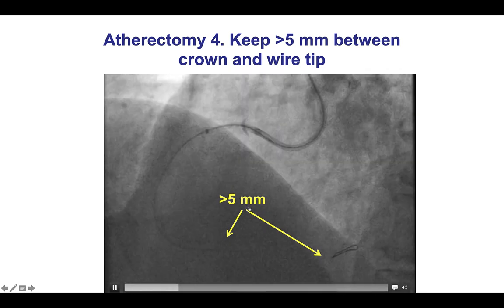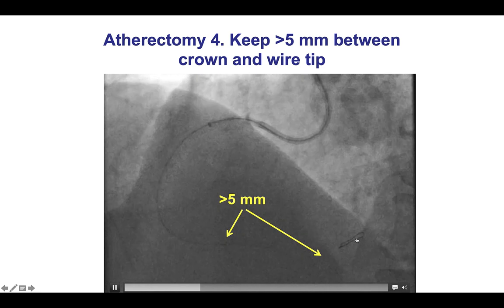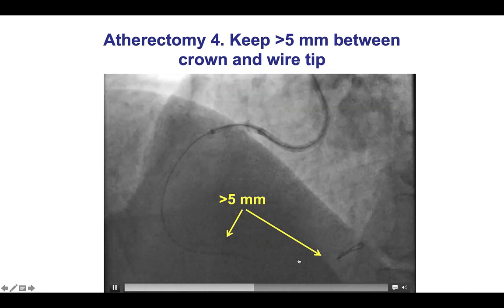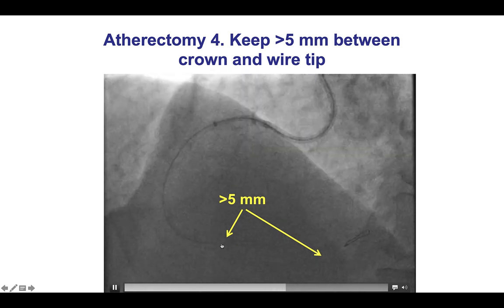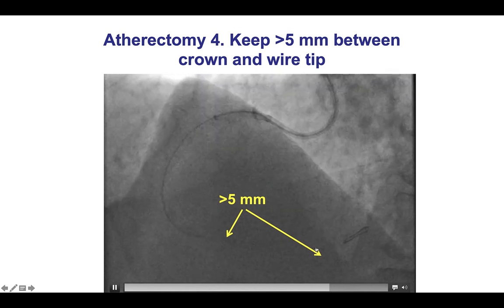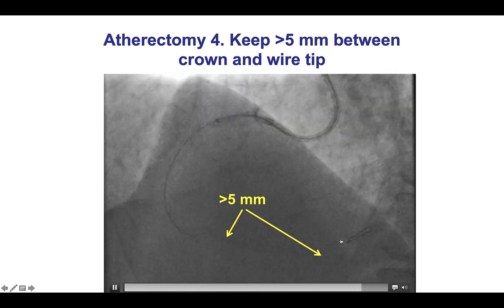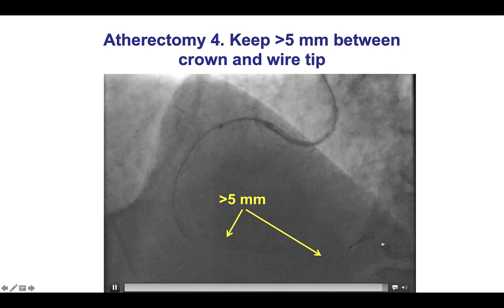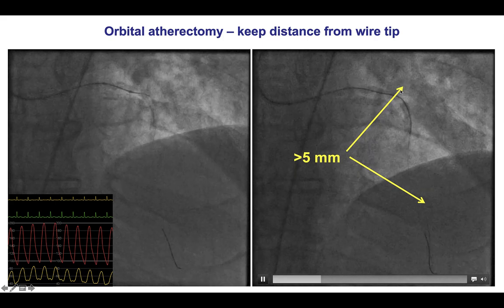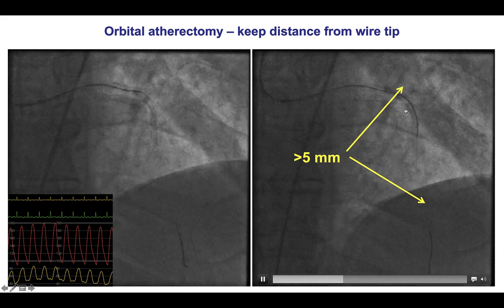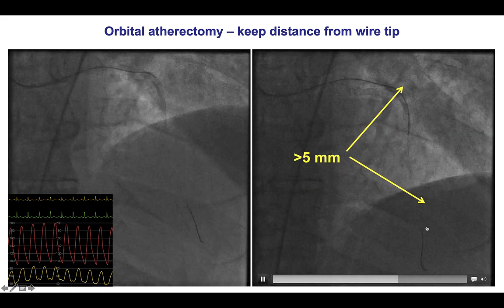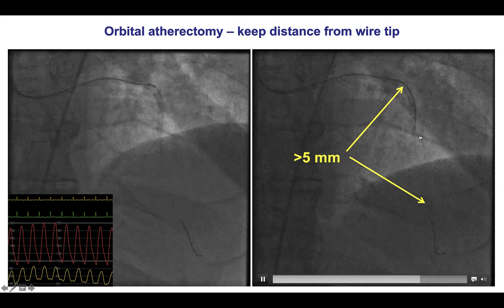In atherectomy, the wire needs to be further down because the distal portion of the atherectomy wire is actually thicker than the proximal portion. If that thicker part is close to the crown or the burr ablator, it can lead to fracture and separation of the distal segment of the guide wire. So enough distance — at least 5, but ideally 10 to 20 millimeters — is preferred when performing either orbital or rotational atherectomy, measured from the distal part of the wire to the position of the crown or the burr.